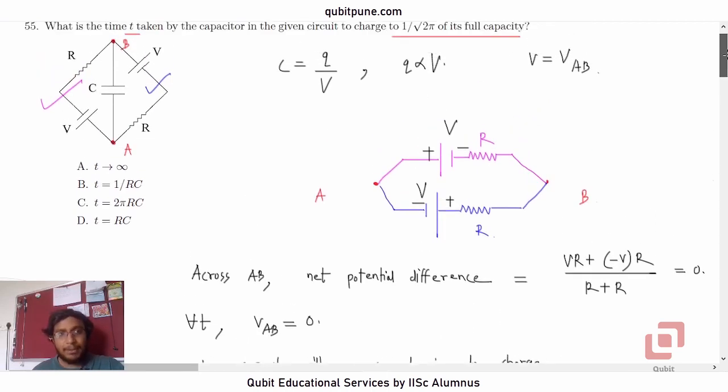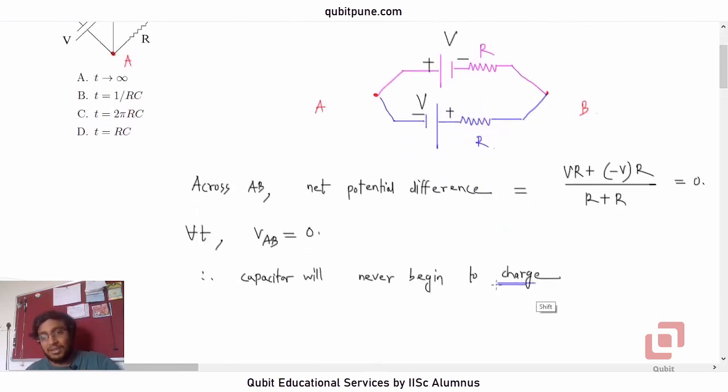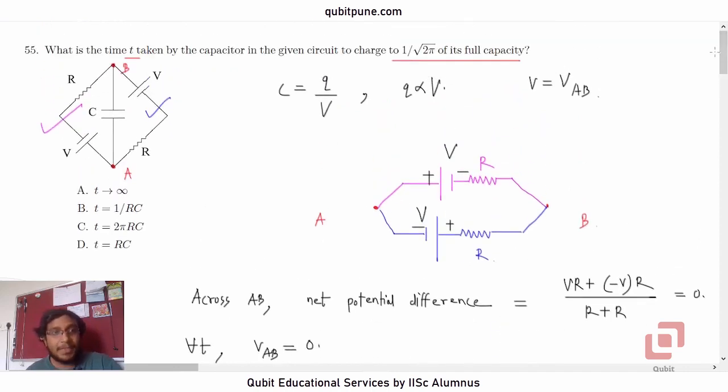I think in this, for this MCQ, there is no appropriate answer. But the one that goes closest to the actual answer is T tends to infinity. But I still don't think that is the right option. Because in T tends to infinity, it is implied that the capacitor is, there is some non-zero rate of charging of the capacitor, which is not the case because according to our arguments, the capacitor should never begin to charge. So, I mean, had there been an option where you'll say the capacitor never begins to charge, I would have marked that one. But the best possible among the four here is, that's not really the right option. But among them, that's the best. So that's 55.